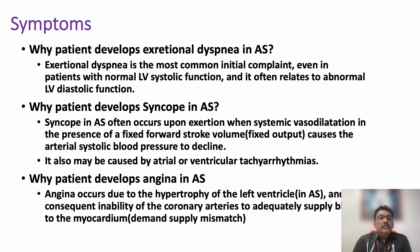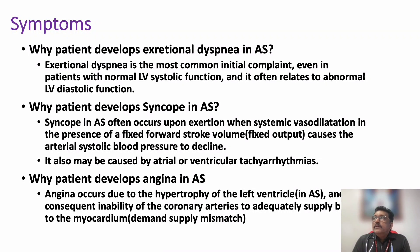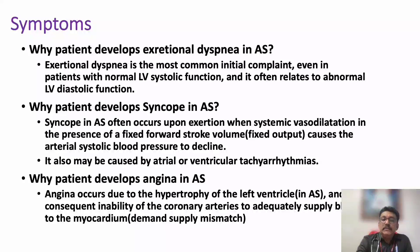Angina is due to demand-supply mismatch. When there is aortic stenosis, left ventricular hypertrophy occurs, increasing demand, but coronary circulation remains the same, so this demand-supply mismatch produces angina. So dyspnea, syncope, and angina are the three most common findings in aortic stenosis.